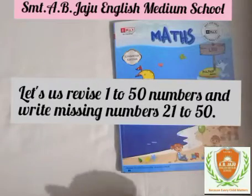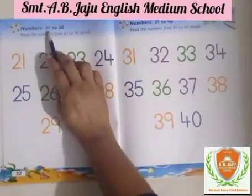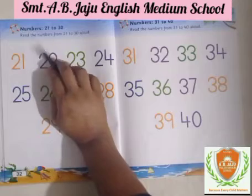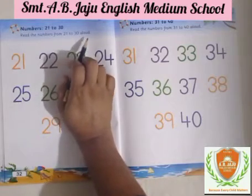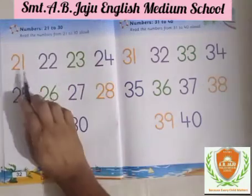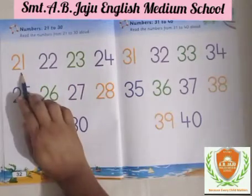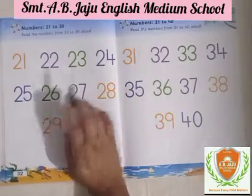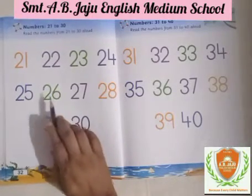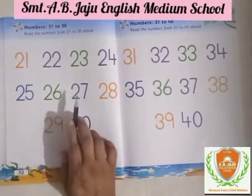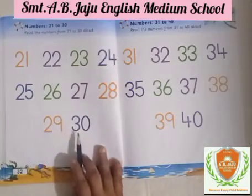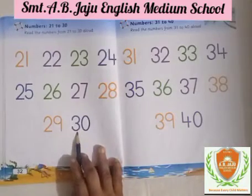Today we are going to learn numbers 21 to 30. Read the numbers from 21 to 30 aloud: 21, 22, 23, 24, 25, 26, 27, 28, 29, 30.